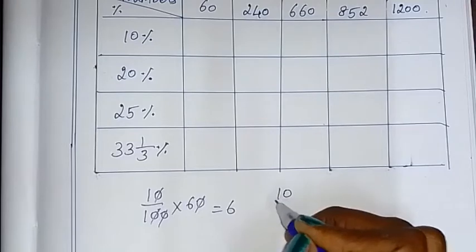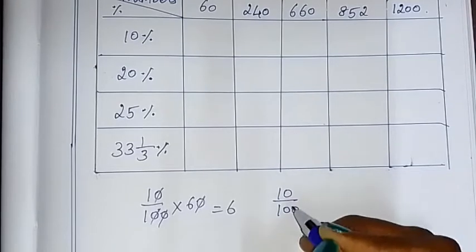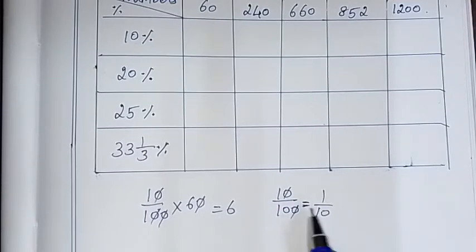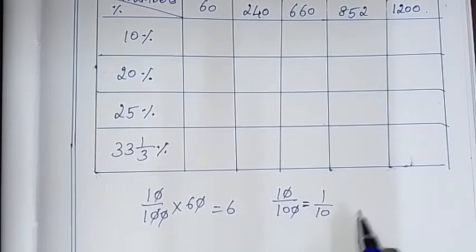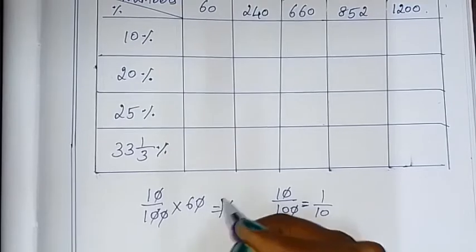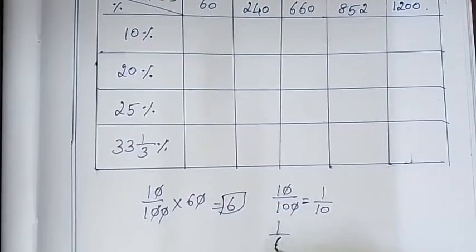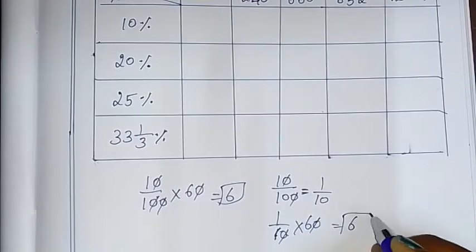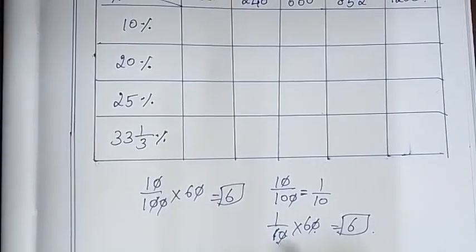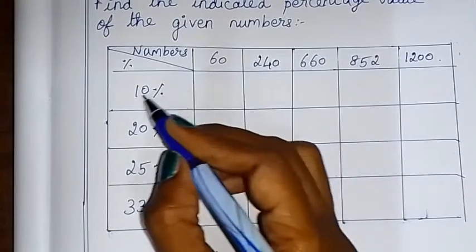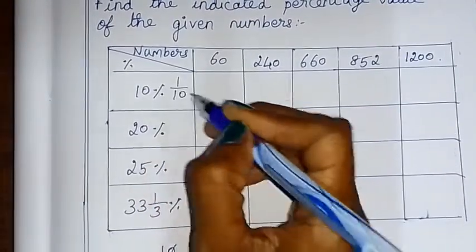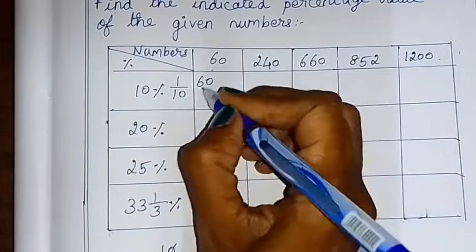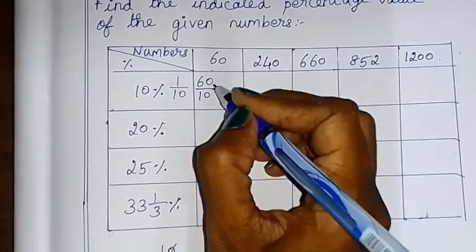Now 10% is 10 by 100. So in this fraction simplified form, we can cut 0 and 0. So this is equal to 1 by 10. So 1 by 10 of 60, we can divide by 10. So this is the simplified fraction form, 1 by 10. This will be easy to calculate. So 60 by 10.